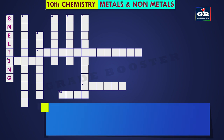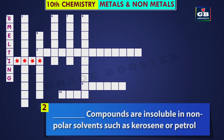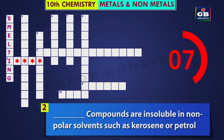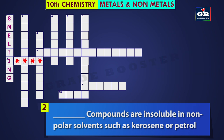Let us see the next one. Two across: dash compounds are insoluble in non-polar solvents such as kerosene or petrol. Did you get it? The answer is ionic. Ionic compounds are insoluble in non-polar solvents such as kerosene or petrol.